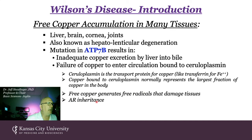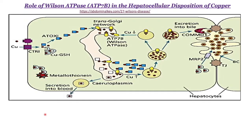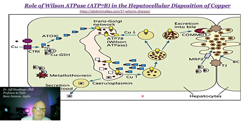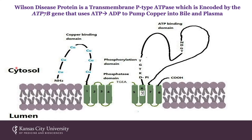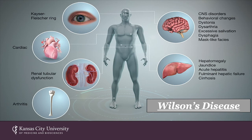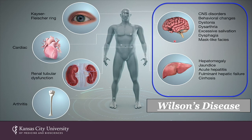Free copper generates free radicals that damage tissues — autosomal recessive inheritance. ATP7B functions in two main places in hepatocytes. When copper levels are normal, in the trans-Golgi network it complexes copper with ceruloplasmin to secrete holoceruloplasmin into the blood. When copper is in excess, ATP7B functions in the excretion of copper into bile via either the canalicular membrane or the basolateral membrane. Wilson's disease has pleiotropic effects, manifesting heavily in CNS and liver disorders, as well as cardiac, renal, and arthritic manifestations.